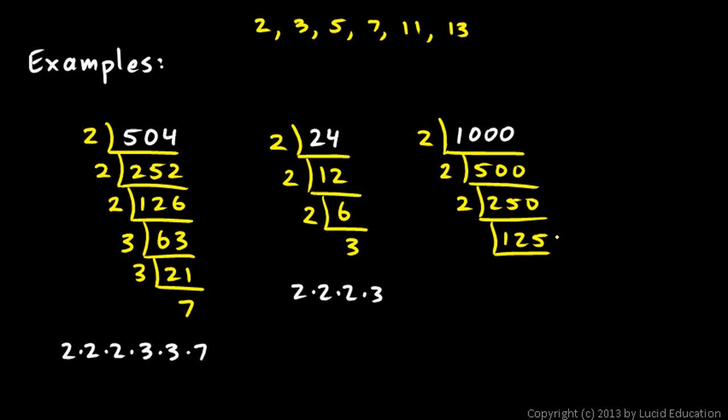Now, 125 is not divisible by 2. And it's also not divisible by 3. But it is divisible by 5. If it's not divisible by 3, we just go to the next number in the list, the 5. And 125 is 5 times 25. And 25, you can probably see real quickly, is divisible by 5. And it's 5 times 5. So this is our answer. 2 times 2 times 2 times 5 times 5 times 5.